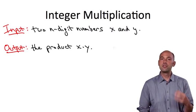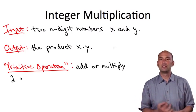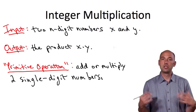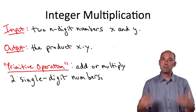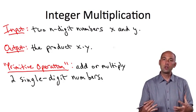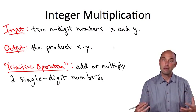For the moment, let's think of a basic operation as simply adding two single digit numbers together or multiplying two single digit numbers. We're going to count the number of these basic operations performed by the third grade algorithm as a function of the number n of digits in the input.